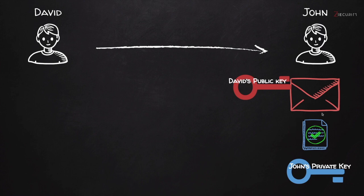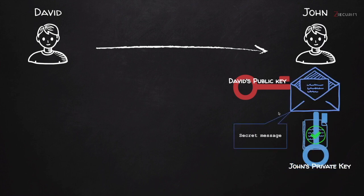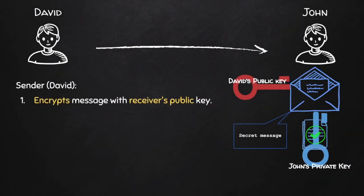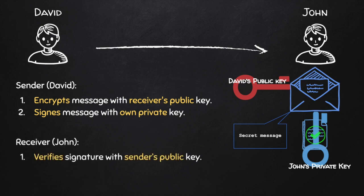So when the signature is verified, we know that David was the actual sender of the message and the message was not modified as it was sent, whether it was sent over the internet as a text message or using any other method of communication. The next step is similar to the previous lecture: John will use his own private key to decrypt the message and read its content. So the sender encrypts the message with the receiver's public key and signs the message with his own private key. The receiver verifies the signature with the sender's public key and decrypts it with his own private key.